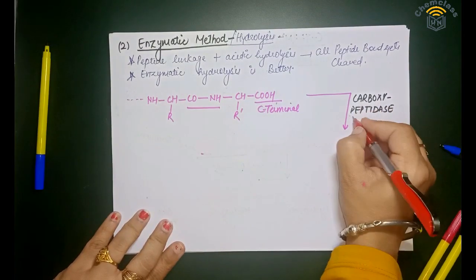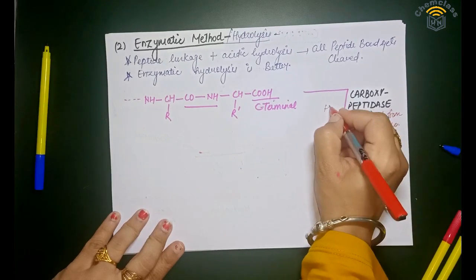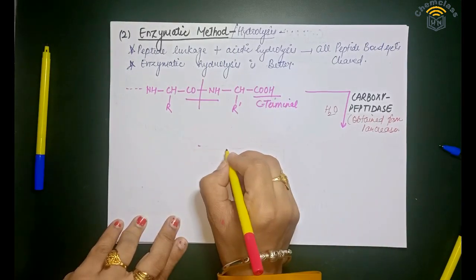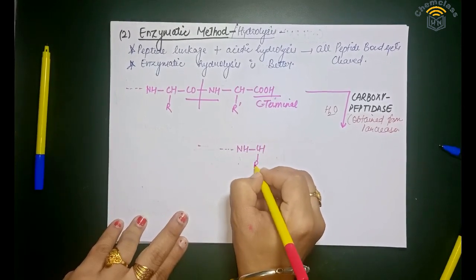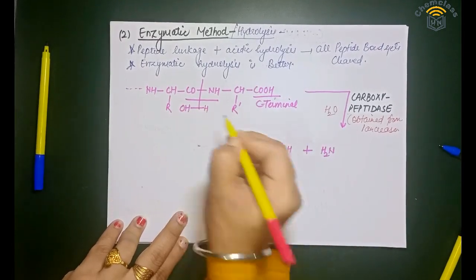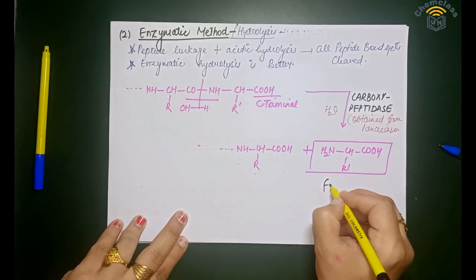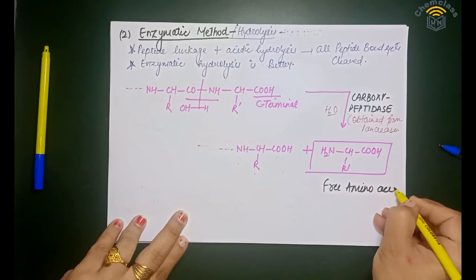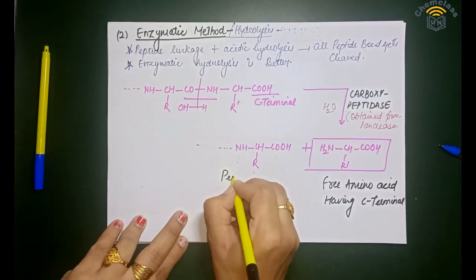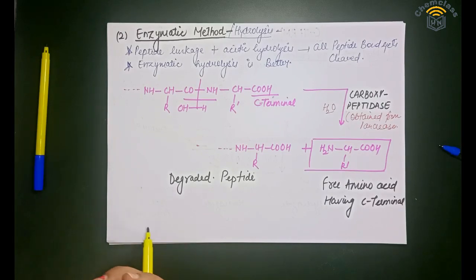Carboxypeptidase is obtained from the pancreas. We do hydrolysis with this enzyme: the peptide bond breaks and we get NH-CHR-COOH plus NH2. Basically we do hydrolysis and get CHR-COOH — the free amino acid having the C-terminal. This is the degraded peptide. This is the whole thing about C-terminal analysis.